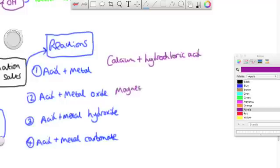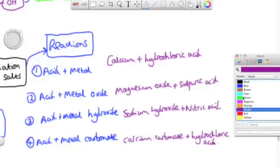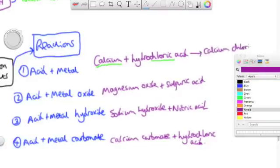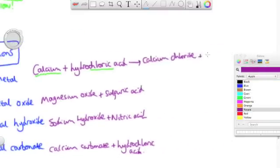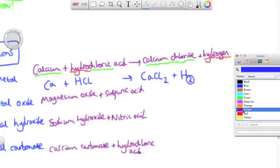First we'll look at calcium plus hydrochloric acid, magnesium oxide plus sulfuric acid, sodium hydroxide plus nitric acid, and lastly calcium carbonate plus hydrochloric acid, which is the reaction that happened earlier with marble chips. Calcium plus hydrochloric acid: the calcium and the chlorine come together to form calcium chloride, and it leaves behind the hydro part, which is hydrogen. There's the word equation there, and the chemical equation. Remember, the hydrogen is diatomic, and therefore you have to balance the equation.